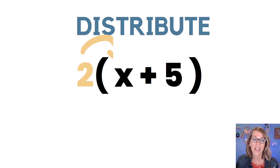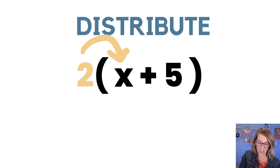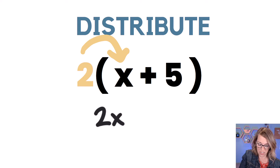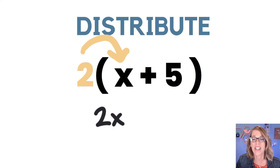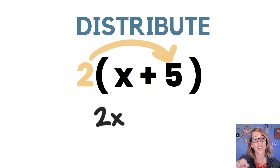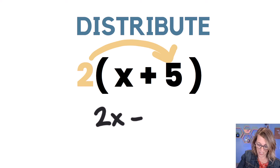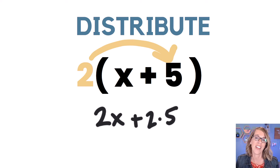I want to start by distributing that two by the x. When I do that, I'm going to do two times x. So I get two x, and then I'm going to do my next distribution and distribute that two to the positive five. I'm going to go ahead and bring down that plus sign, so it's going to be plus two times the five.